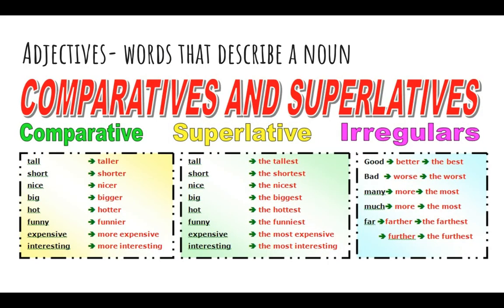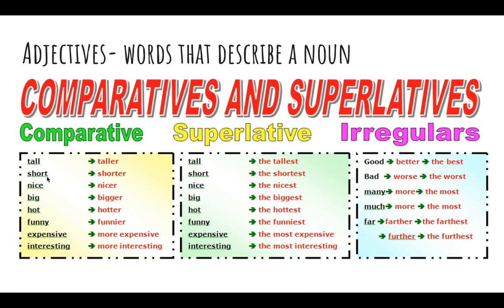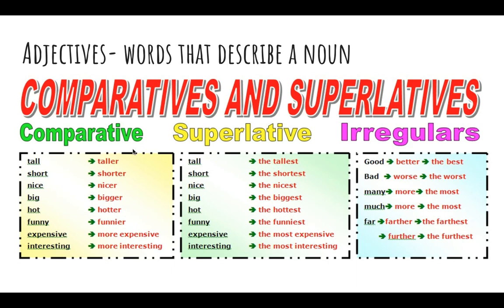The last one we're going to do today is adjectives. Adjectives are words that describe a noun — tall, short, nice, big, hot, funny, expensive, interesting. 'My refrigerator is tall.' 'Miss Moore is short.' 'My dog is big.' 'It is hot outside.' Those are regular adjectives. But we also have comparative adjectives, which compare two things: 'My fridge is taller than my oven.' 'My pug is shorter than my big dog.' 'It is hotter today than it was yesterday.'